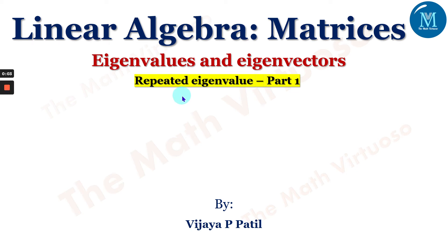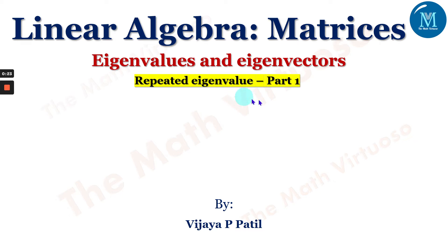Hello and namaste. In continuation of the linear algebra topic on matrices, we have already started with eigenvalues and eigenvectors. We have covered how to find eigenvalues and vectors for matrices having distinct eigenvalues. Now let us go with repeated eigenvalues — how to find the vectors and the eigenspace. We are dealing here with Part One.